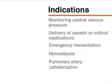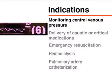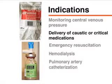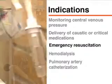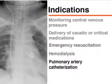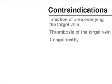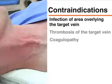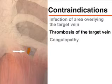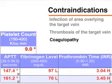The placement of a central venous line is indicated for the continuous monitoring of central venous pressure, the delivery of critical or caustic medications, for emergency resuscitation, hemodialysis, and pulmonary artery catheterization. General contraindications include infection of the area overlying the target vein and thrombosis of the target vein. Site-specific and relative contraindications include coagulopathy. Although this is not an absolute contraindication, extreme care must be exercised in patients with coagulopathy and in those for whom complications would be life-threatening.